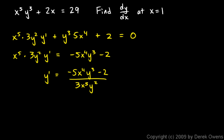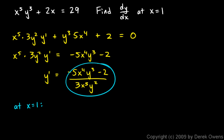Now we need to find the derivative at x equals 1. We'll plug in 1 for x in the formula, but we also need to know what y is when x equals 1. So we take the original equation, put in 1 for x, and solve for y — that gives us the value to plug in for y.